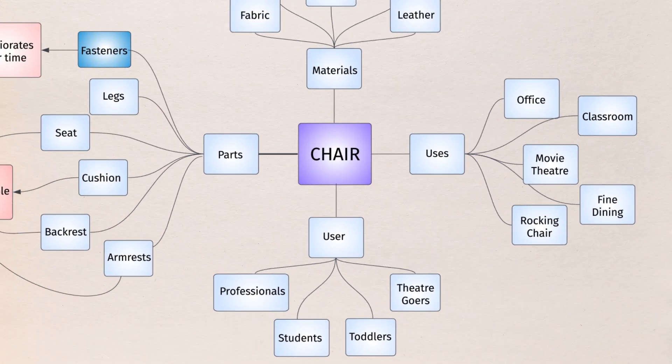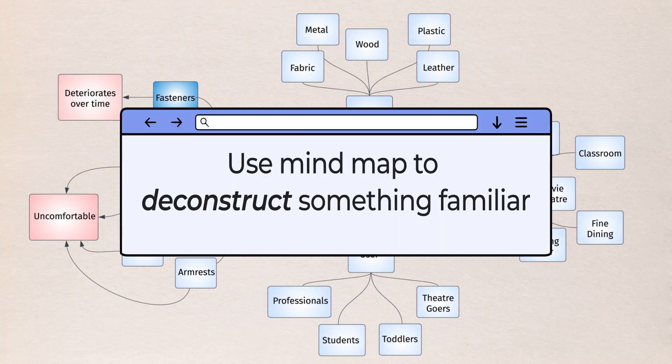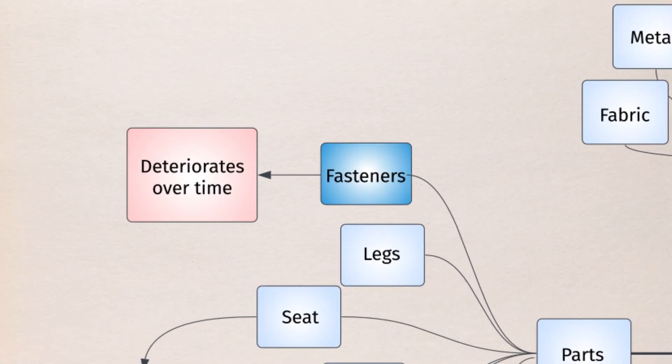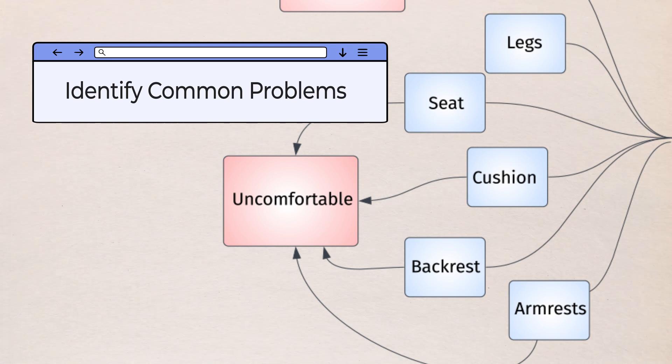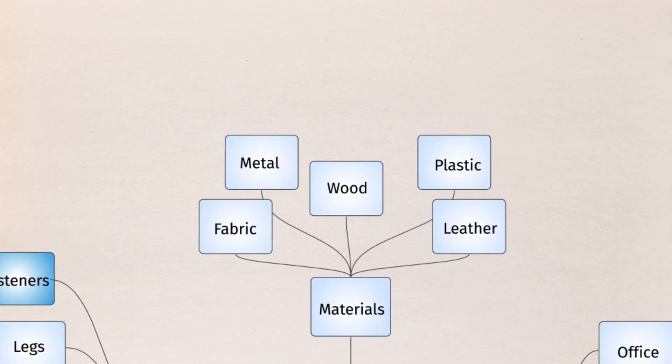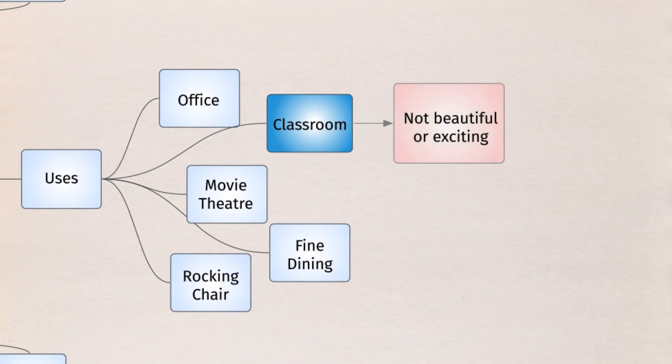Mind mapping is all about making a visual representation of what's in your head, so use it creatively to help you deconstruct a familiar product, as we've done here. You can also take it a step further and begin to form new connections or identify common problems. For instance, there are sustainability issues with many chair materials. And most classroom chairs are just plain boring.